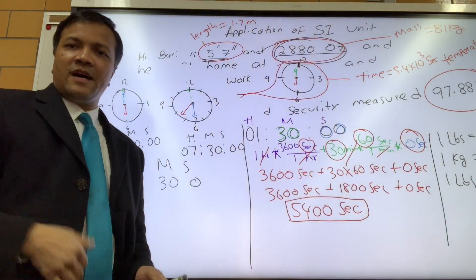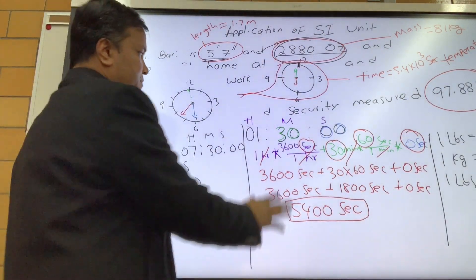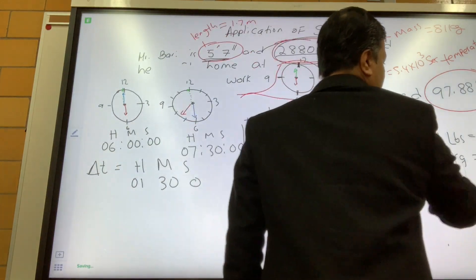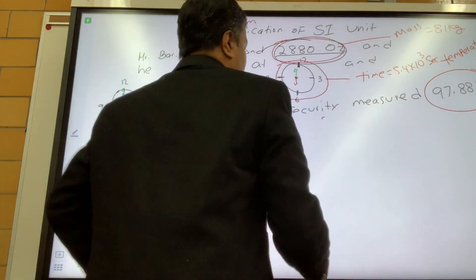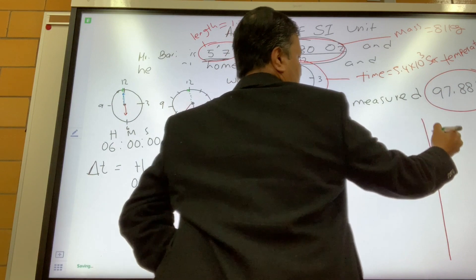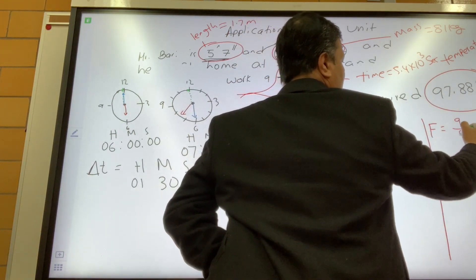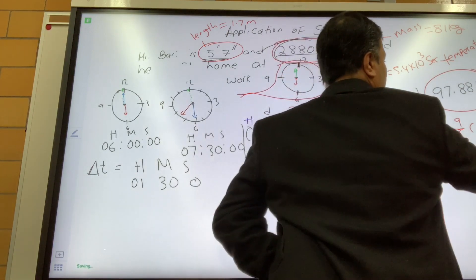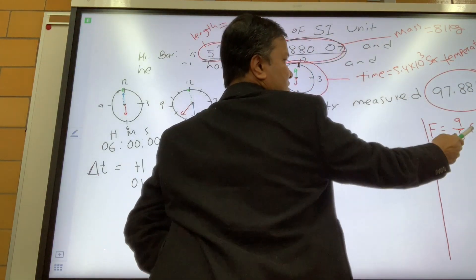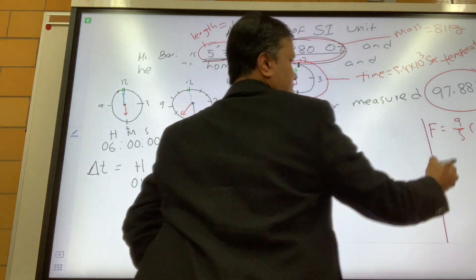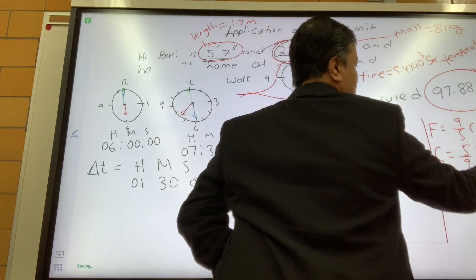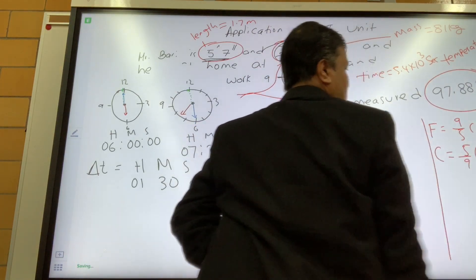Now let's do the third and final part. Final part is the temperature, converting the temperature to the SI unit. So we have Fahrenheit given, but let's give you the formula. F is equal to 9 over 5 Celsius plus 32.